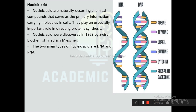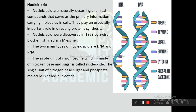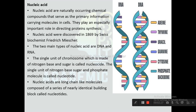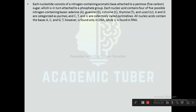The two main types of nucleic acid are DNA and RNA. The single unit of a chromosome made of a nitrogen base and sugar is called a nucleoside. The single unit of a nitrogen base, sugar, and phosphate molecule is called a nucleotide. Nucleic acids are long chain-like molecules composed of a series of nearly identical building blocks called nucleotides. Each nucleotide consists of a nitrogen-containing aromatic base attached to a pentose sugar, which in turn is attached to a phosphate group.